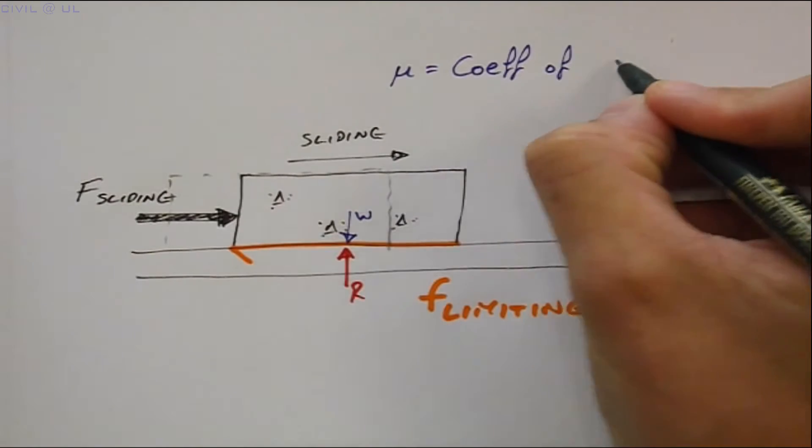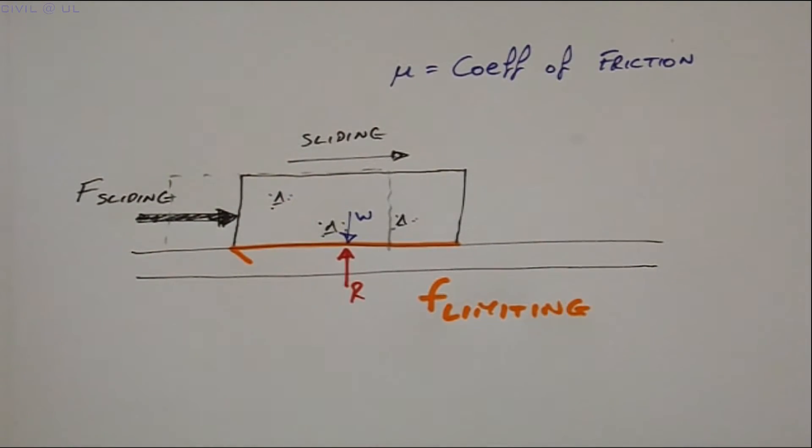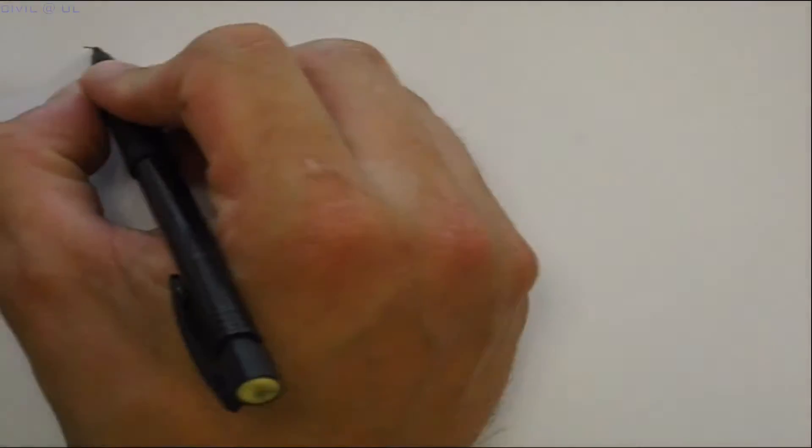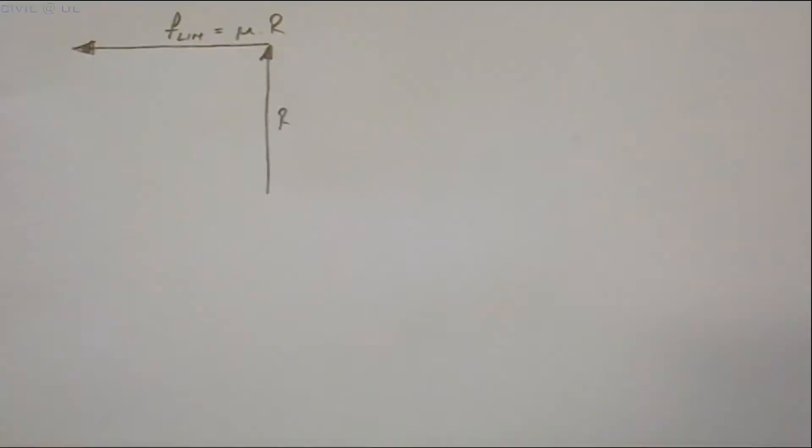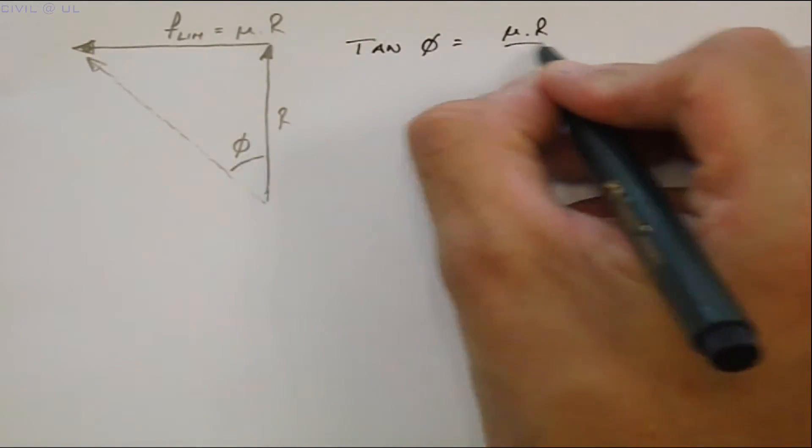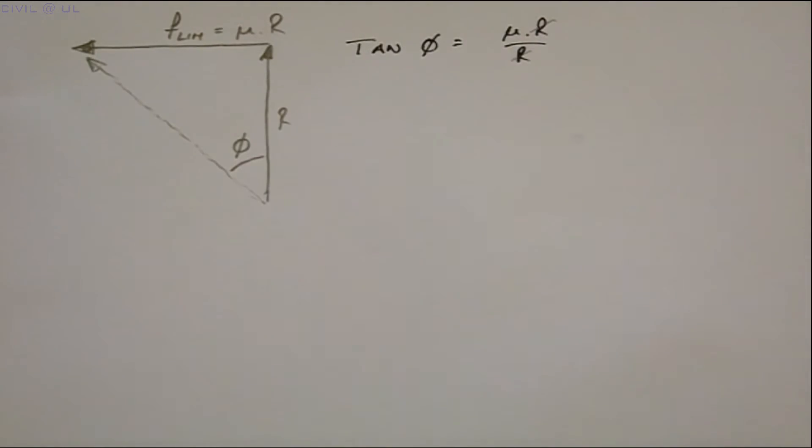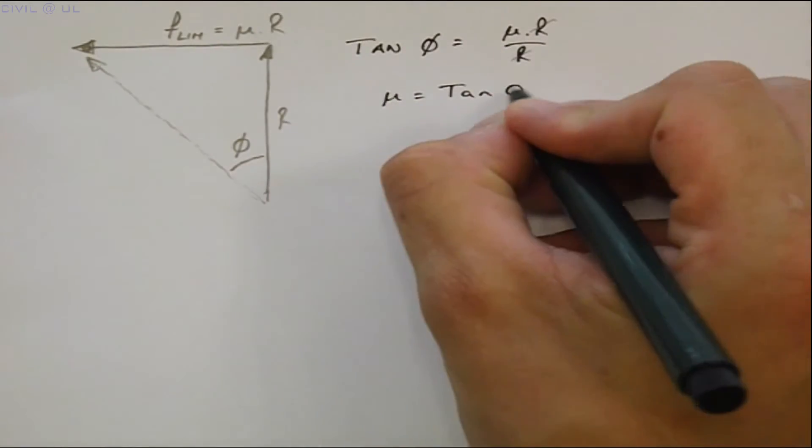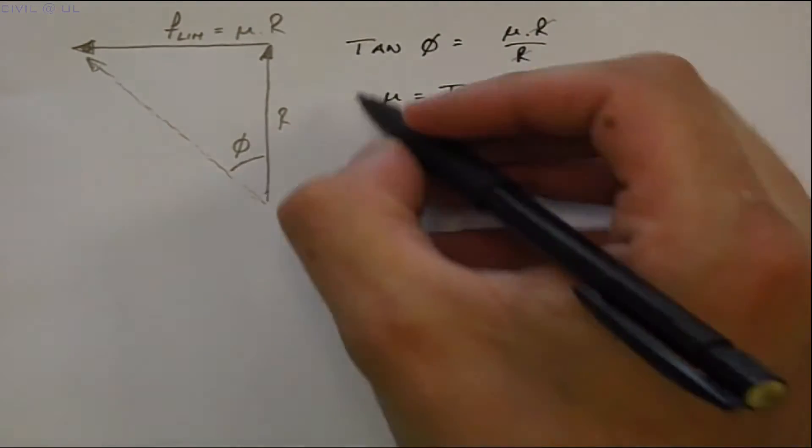It can be shown that the magnitude of the limiting frictional force is related to the normal reaction, R, by the coefficient of friction between the block and the table. By adding these reactive forces vectorially, we see that tan phi is equal to mu times R divided by R, or mu can be expressed as the tan of the angle of friction phi.